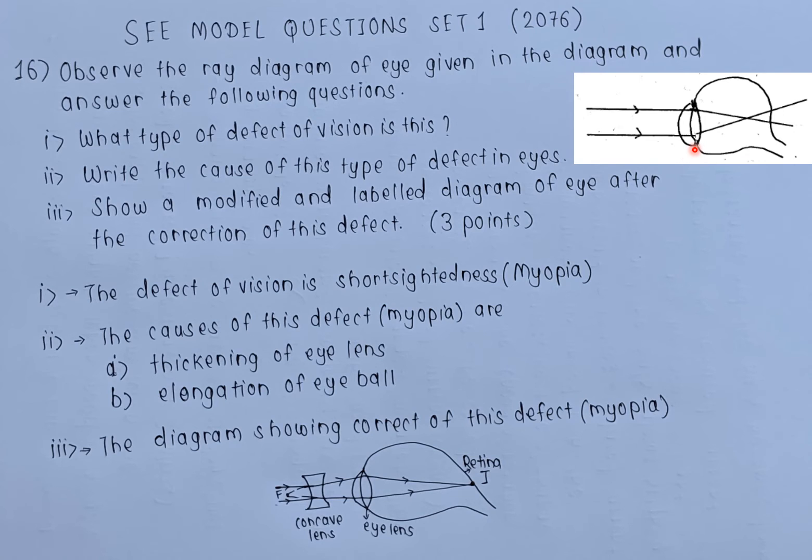The third question: you have to draw the modified and corrected version of the diagram. If you look at this diagram, you find since the rays converge before the retina, you need something diverging over here so that the rays can meet at the retina and the image is formed.